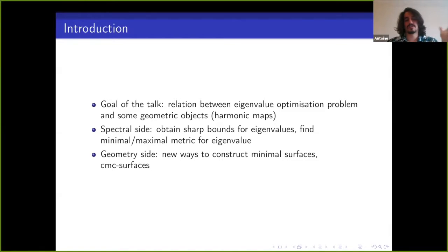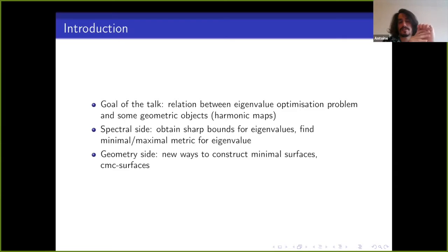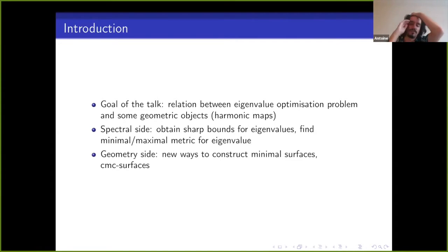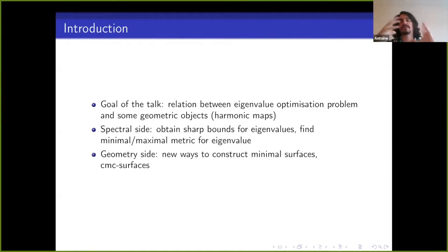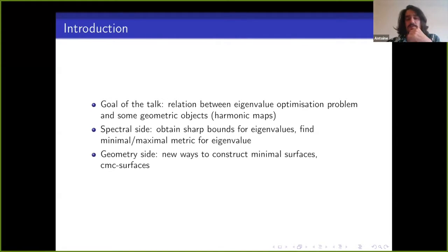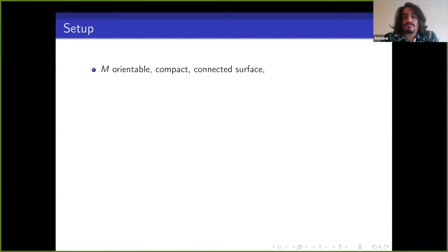On the geometric side, through this relationship we get new ways to construct minimal surfaces, free boundary minimal surfaces if you look at the Steklov problem, or even CMC surfaces — constant mean curvature surfaces. Basically when you look at the Dirac problem and try to optimize eigenvalues, you can sometimes rewrite the minimality condition in terms of CMC surfaces, which is interesting if you're interested in the analytic-geometric side.